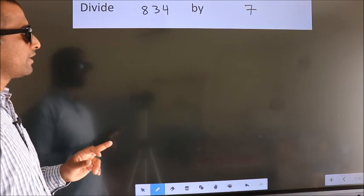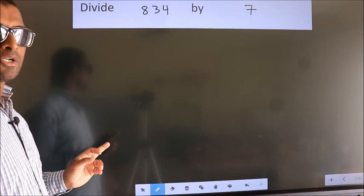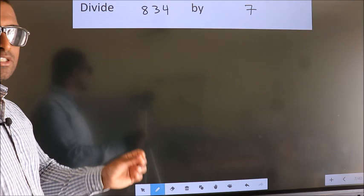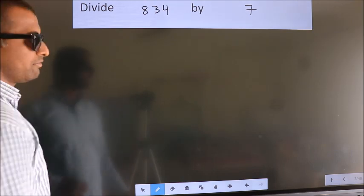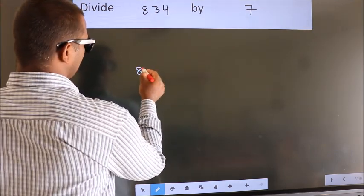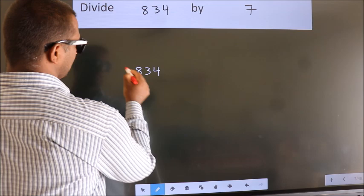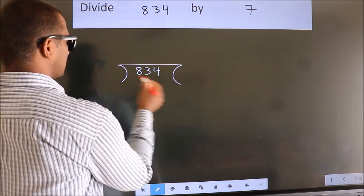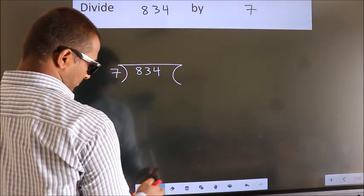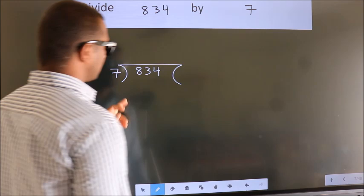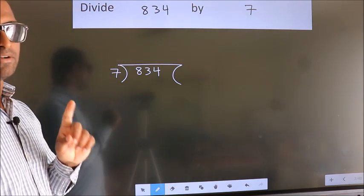Divide 834 by 7. To do this division we should frame it in this way. 834 here, 7 here. This is your step 1.